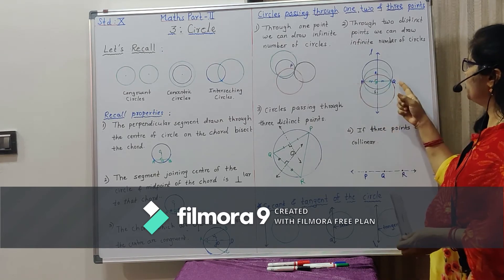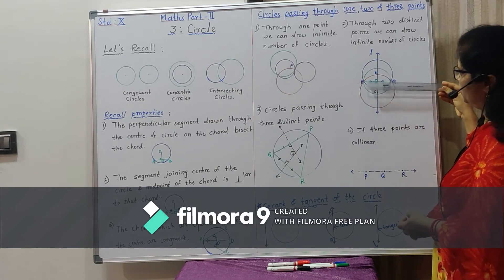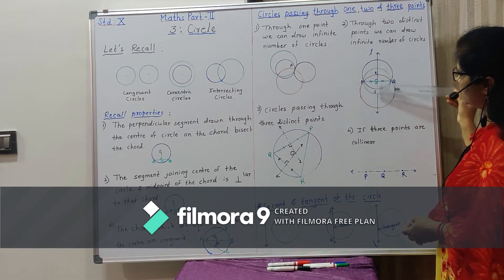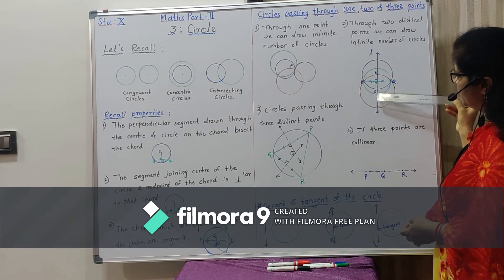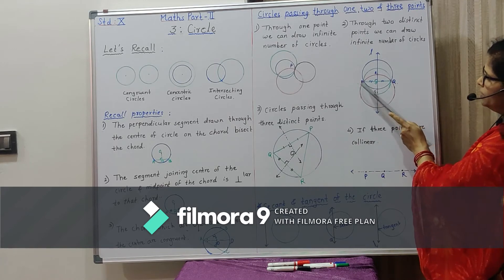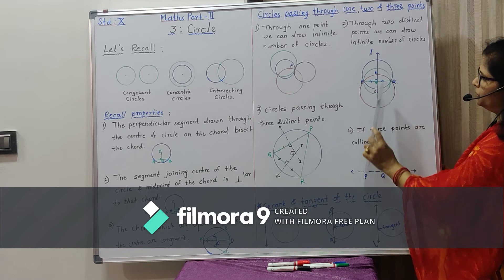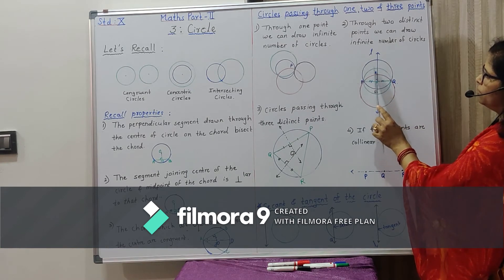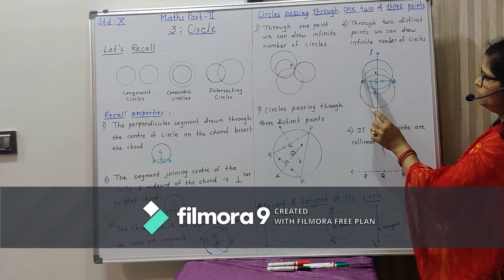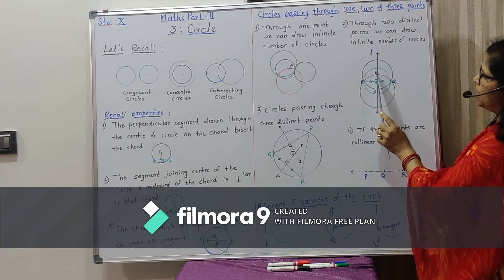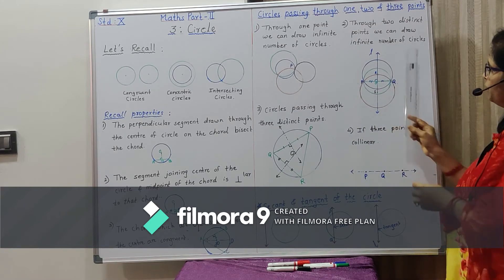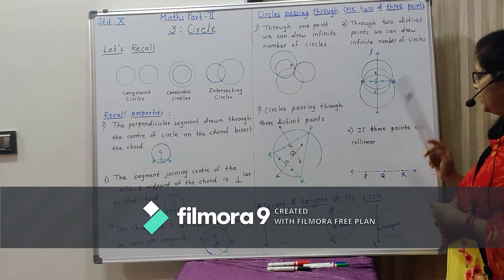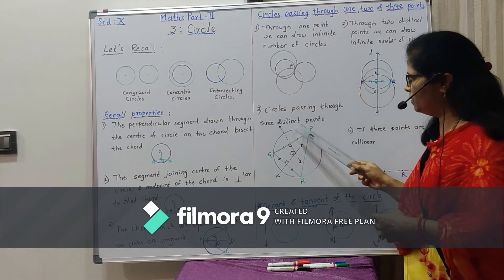Draw segment PQ and draw line L which is the perpendicular bisector of segment PQ. Take any point on line L as the center. If S is taken as the center, take radius SP or SQ and draw a circle passing through P and Q. Similarly, take O as center and draw a green circle through P and Q, and a blue circle with center R on line L. Since there are infinite points on line L, we can draw infinite circles through P and Q.